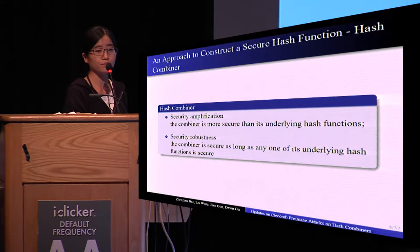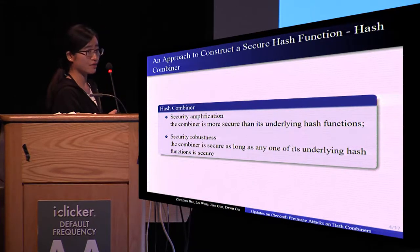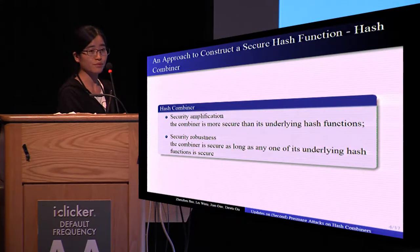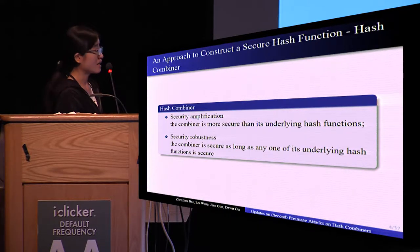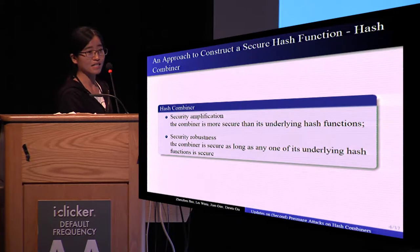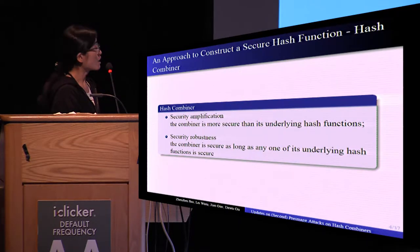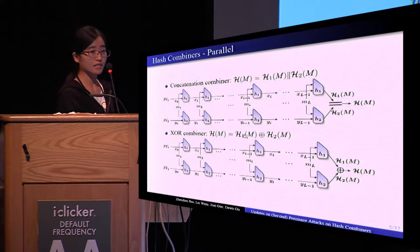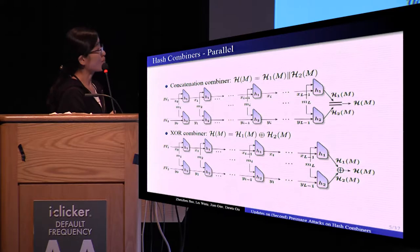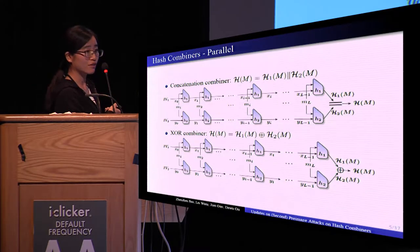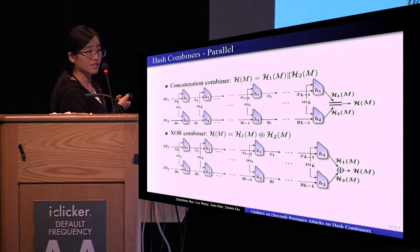Among the approaches to build a secure hash function, there is one using the so-called combiner — combining multiple unrelated hash functions such that the resulting function provides security amplification and robustness. That is, the combiner is more secure than its underlying hash functions, or it is secure as long as at least one of the underlying hash functions is secure. Two classical hash combiners are the concatenation combiner and the XOR combiner. The concatenation combiner processes the same message under two hash functions in parallel and outputs the concatenation of the two n-bit hash digests, so the output is 2n bits.